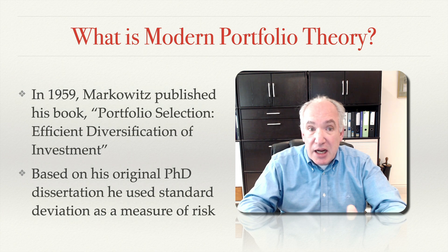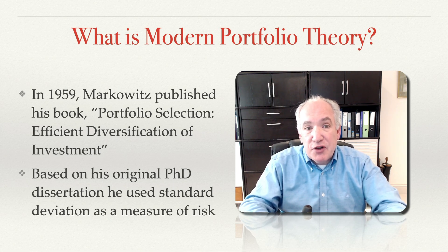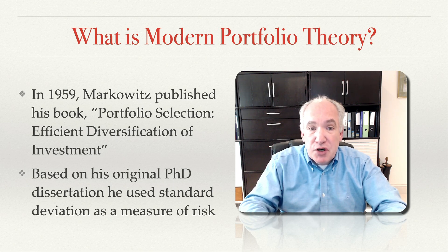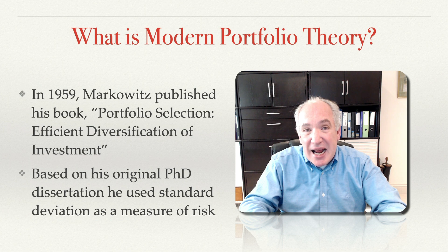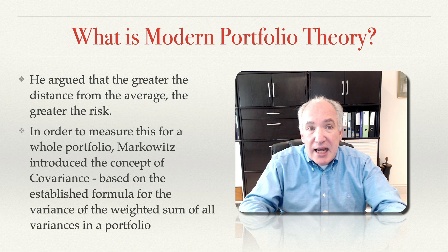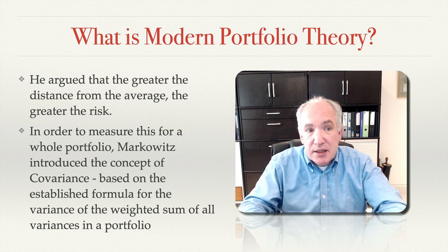In 1959, Markowitz published his book 'Portfolio Selection: Efficient Diversification of Investment.' Based on his original PhD dissertation, he used standard deviation as a measure of risk, arguing that the greater the distance from the average, the greater the risk.